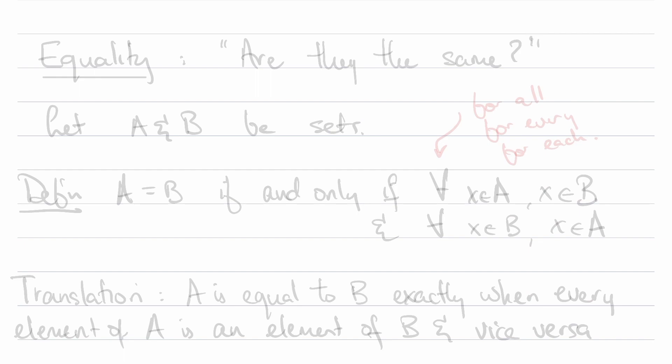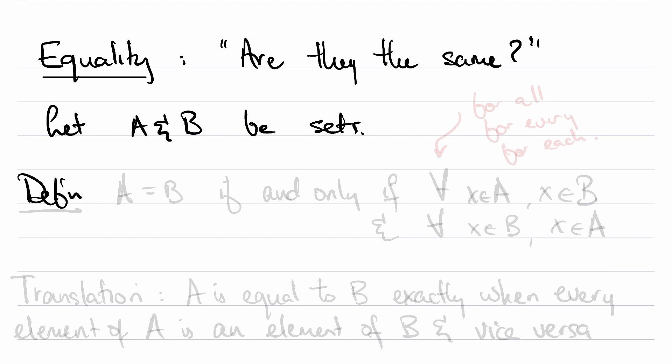The most basic thing we need to know is how to tell when two sets are the same and when they're different. This is, as usual, the notion of equality. Let's start with A and B being sets. Definition: A is equal to B if and only if